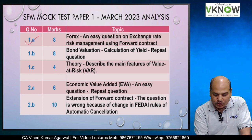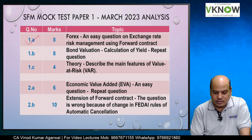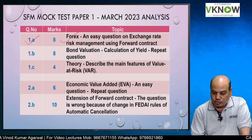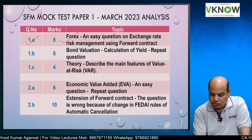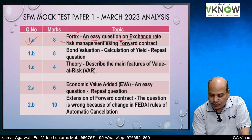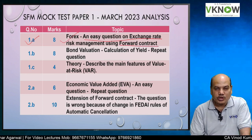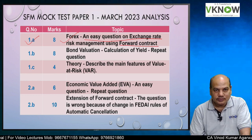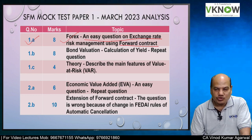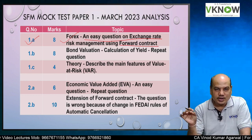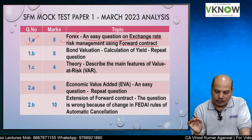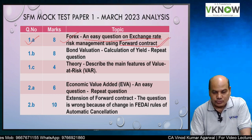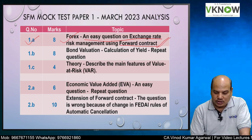Question 1A was for 8 marks and it was very easy. You have to hedge foreign exchange risk using a forward contract, and you are also given probabilities of certain exchange rates. Check whether using the expected spot rate will be better or the forward rate will be better. It is a very basic question that we teach in the classroom.